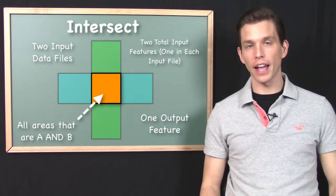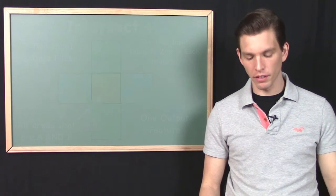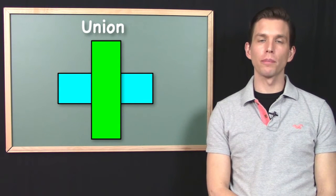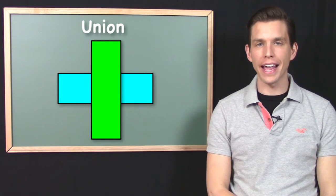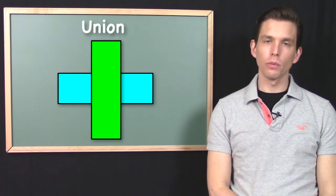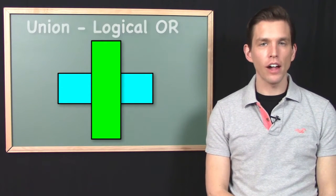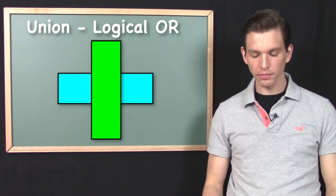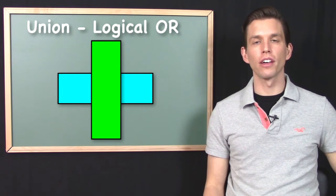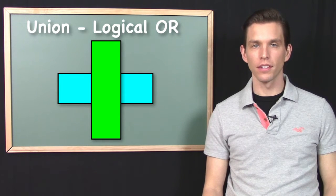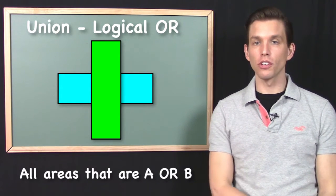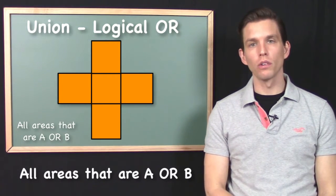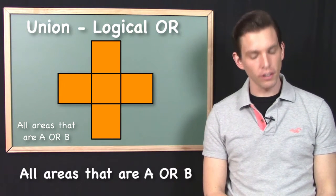So let's take a look at how the union operation would be different. Remember that the intersect operation was all about logical AND. When we talk about union, we're talking about logical OR. So we're associating the union tool with logical OR. If you say that you want all areas that are A or B, that's when you reach for the union tool. So if you were to union these two datasets, here is what the output would look like.